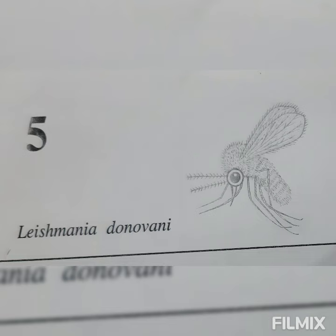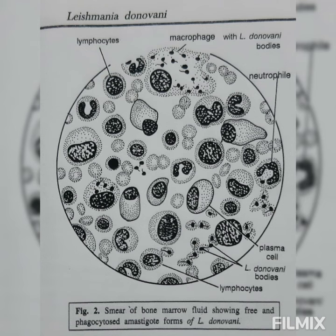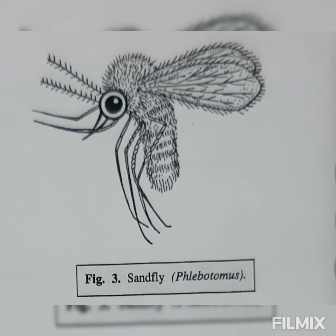Leishmania donovani life cycle in man. First, infection. In India, Leishmania donovani is transmitted to man by the sandfly Phlebotomus argentipes.